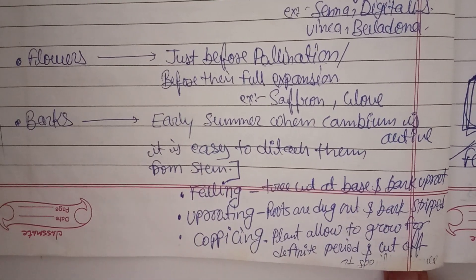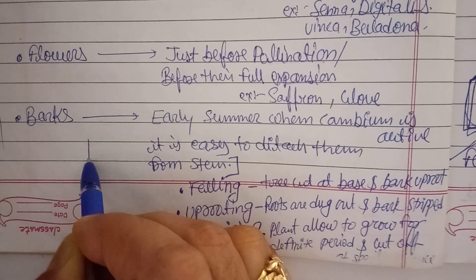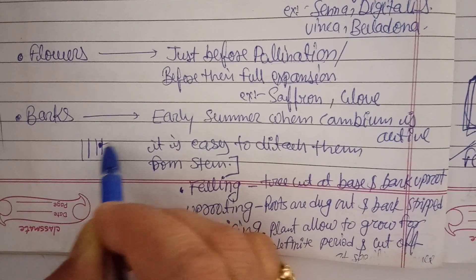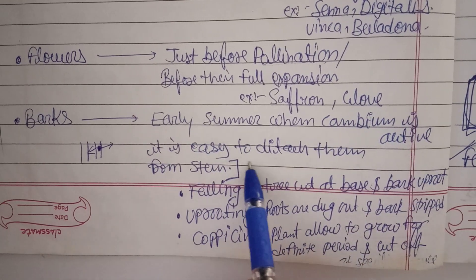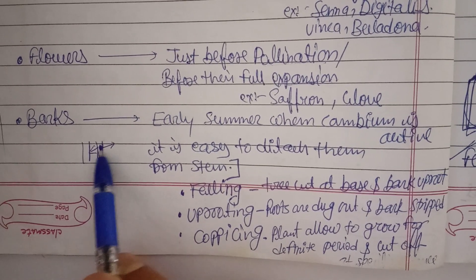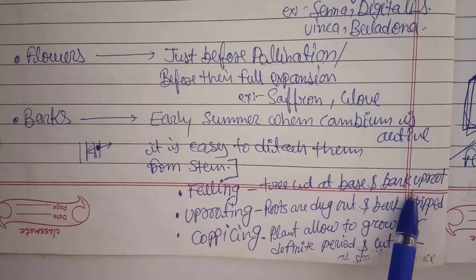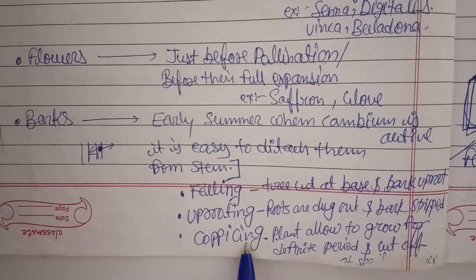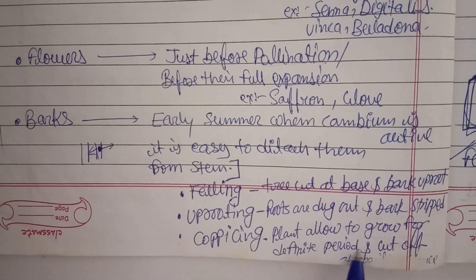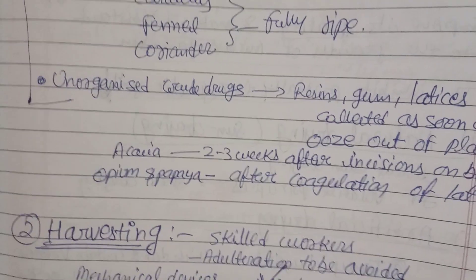For bark collection, early summer is the right time when the cambium is active. The cambium is the layer that drives growth toward bark and wood, and when it is active it is easy to detach the bark from the stem. Methods include felling the tree and stripping the bark, uprooting and stripping, or coppicing — where plants are allowed to grow for a definite period and then cut with different tools.